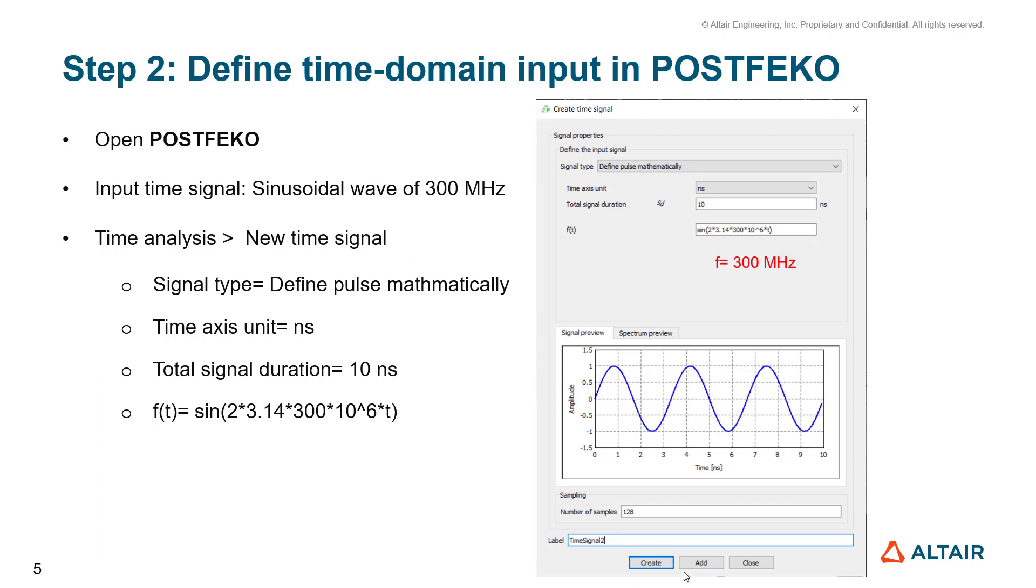Here, you can see this kind of window. The signal type is defined pulse mathematically. Time analysis axis unit is nanosecond. And total signal duration is 10 nanosecond. F(t) function of time is sin(2π × 300 MHz × t).